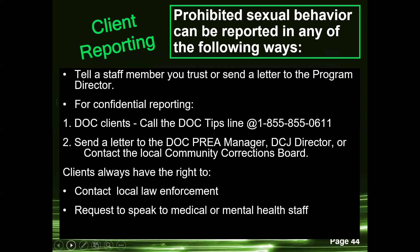Prohibited sexual behavior can be reported by clients in the following ways: tell a staff member you trust, or send a letter to the program director. For confidential reporting, call the DOC tip line if a DOC client, send a letter to the DOC PREA manager, DCJ director, or contact the local community corrections board. Clients always have the right to contact law enforcement or request to speak with medical or mental health staff.